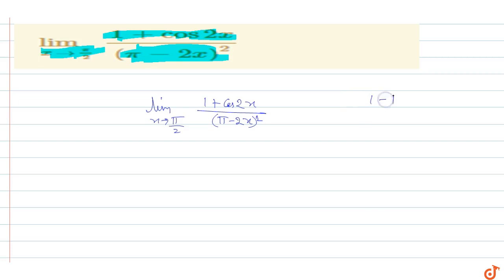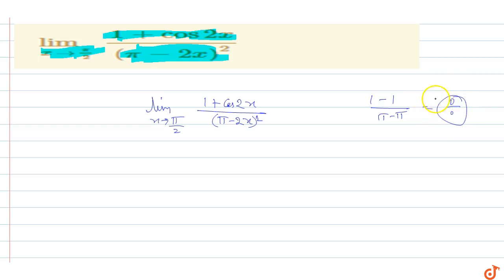Substituting x = π/2 gives (1 - 1) / (π - π), which is 0/0 — an indeterminate form. Since we have an indeterminate form, we apply L'Hôpital's rule.